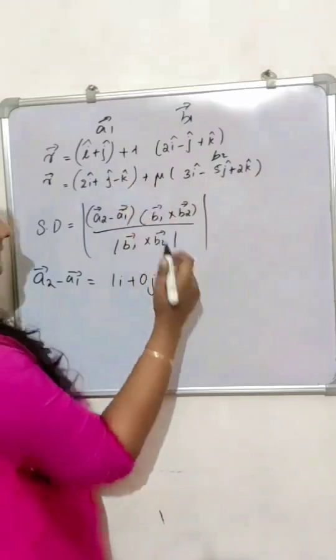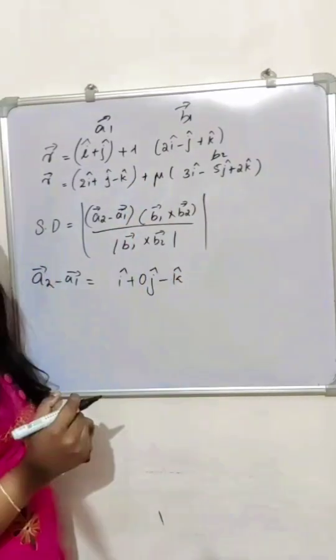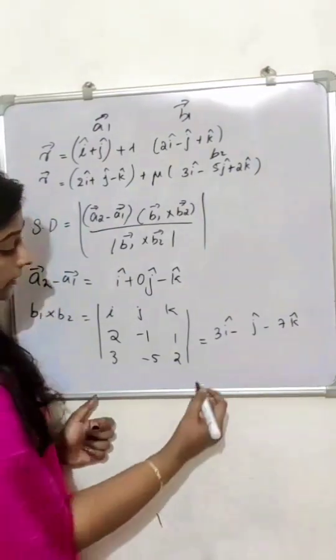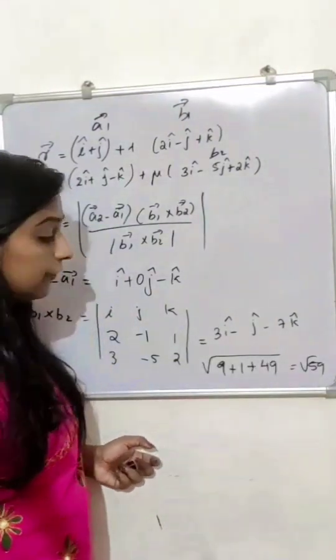We need to find b1 cross b2 divided by modulus of b1 cross b2. The result is root 59.